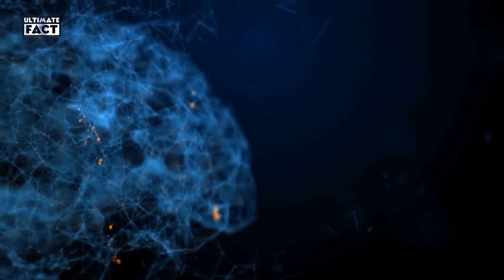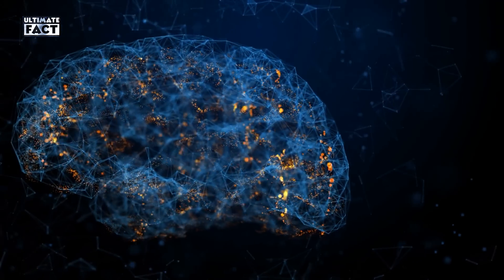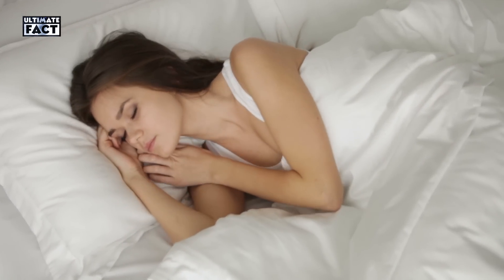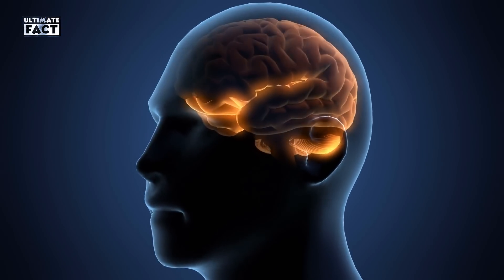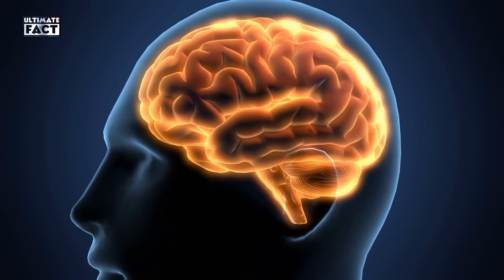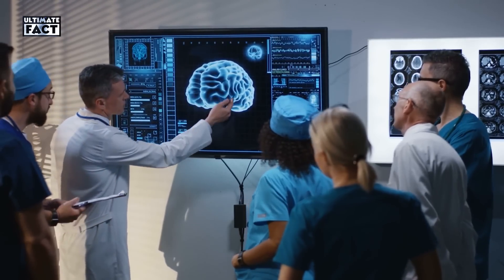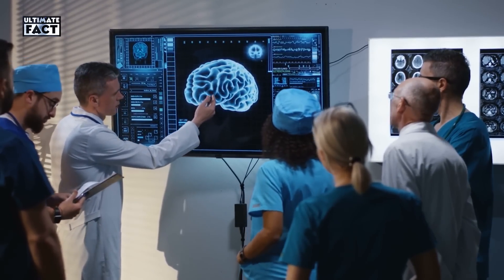Each of our brains is made up of billions of nerve cells called neurons which are constantly active even when we're asleep. While our brain only weighs about three pounds, it requires 20% of our heart's output of blood to keep functioning.